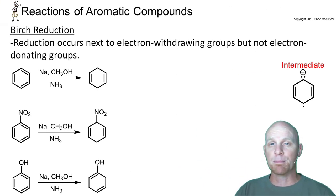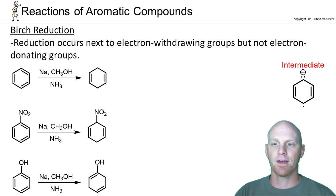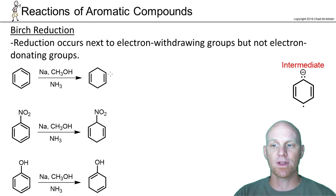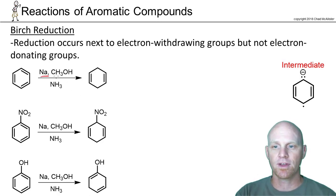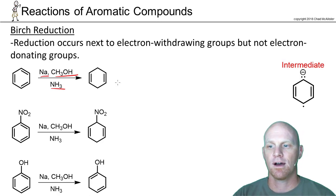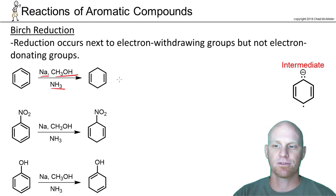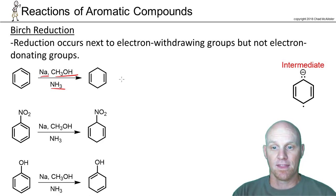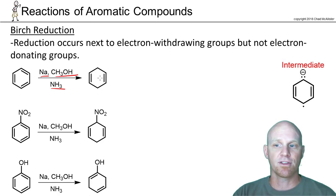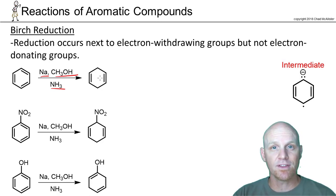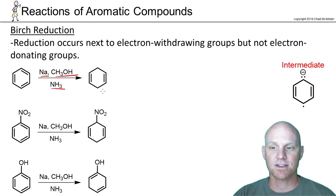Next on the list is the Birch reduction, and it's not a complete reduction of benzene — it'll reduce one out of the three sets of pi electrons in benzene, and we'll end up with a non-aromatic product. Sodium, methanol, and ammonia are the reagents of choice. The key thing here is we end up with pi electrons opposite each other — they're not conjugated, they are isolated, so no delocalization in the product.